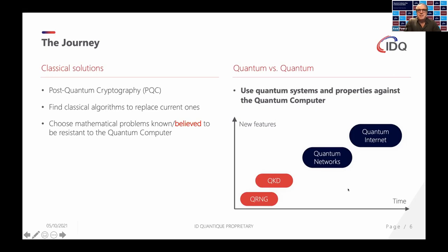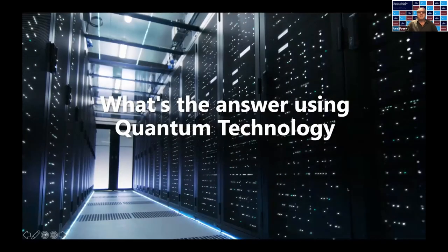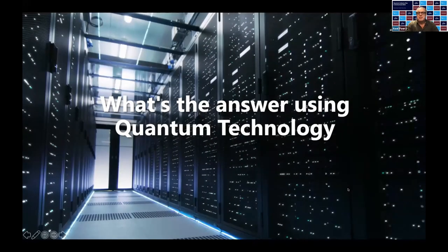On the quantum side, we have a clear journey which we have promoted for a couple of years. It starts with randomness, adds QKD on top of the existing encryption architecture with symmetric keys to be quantum safe, and goes forward into quantum networks. The target picture is the quantum internet, which connects different quantum computers in an entangled way.